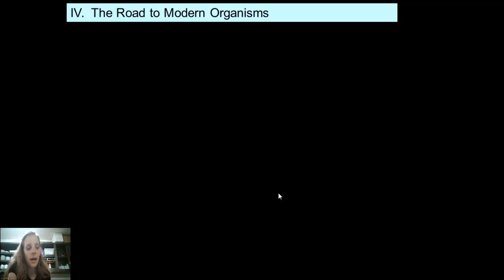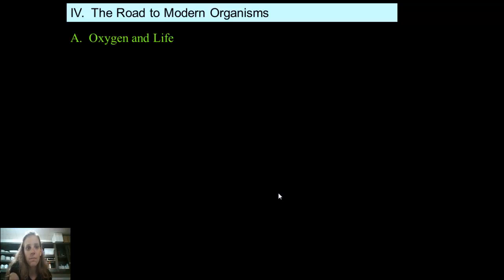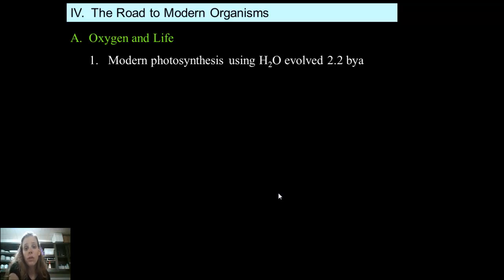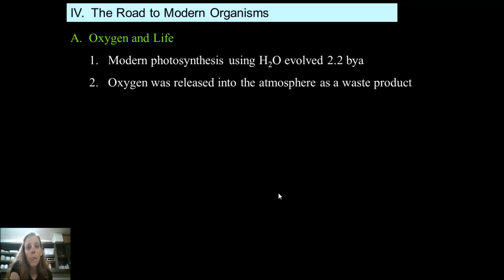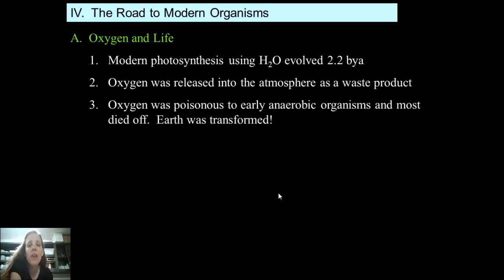This is all still very primitive — we're talking about single-celled organisms that lack a nucleus. Modern photosynthesis using water started to evolve about 2.2 billion years ago, and oxygen was released into the atmosphere as a waste product. That release of oxygen began to change the composition of Earth's atmosphere. However, oxygen was actually poisonous to early anaerobic organisms and most of them died off.